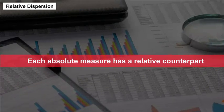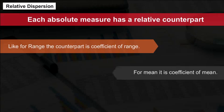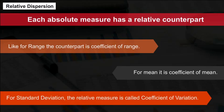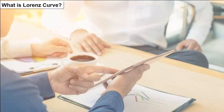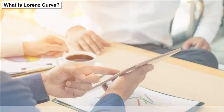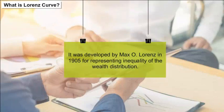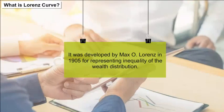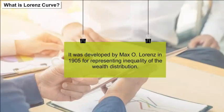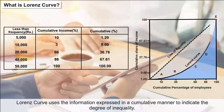Each absolute measure has a relative counterpart: for range, it is the coefficient of range; for mean deviation, it is the coefficient of mean deviation; for standard deviation, the relative measure is called the coefficient of variation, calculated as (Standard Deviation / Arithmetic Mean) × 100. The Lorenz curve is a graphical measure to estimate inequalities in distribution, developed by Max O. Lorenz in 1905, and uses cumulative data to indicate the degree of inequality in wealth or income distribution.